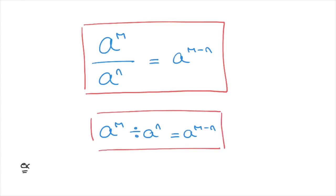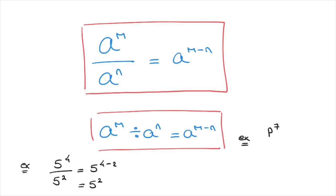As a quick example, let's simplify 5 to the power of 4 over 5 to the power of 2. Using this formula, that equals 5 to the power of 4 minus 2, which equals 5 to the power of 2. Another example: simplify p to the power of 7 over p to the power of 3. Using this rule, this equals p to the power of 7 minus 3, which equals p to the power of 4.